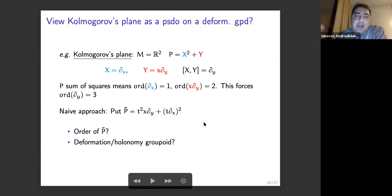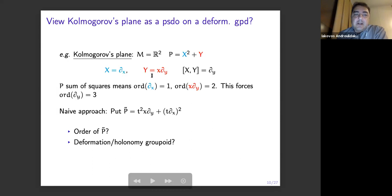Now let's go to the Kolmogorov plane — this is the example I mentioned in the first slide: X² + Y, where X, the blue vector field, is ∂_x, and Y is x∂_y. It's just a simple exercise to see that the bracket is ∂_y. So there is going to be some Heisenberg group lurking around here. If you really want to see it as a sum of squares, you must assume that the order of the blue vector field is one and the order of the red one is two. So this forces the order of ∂_y to be three.